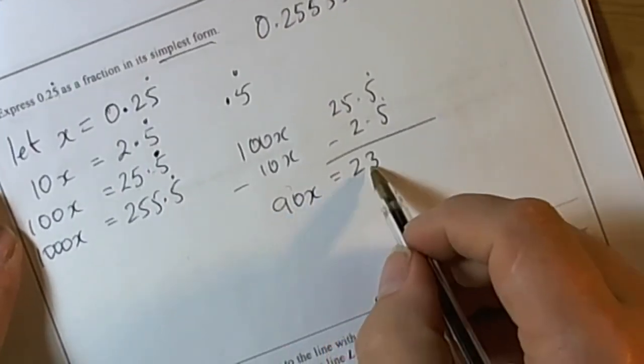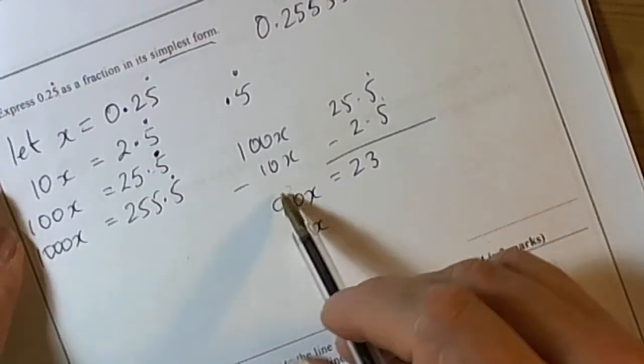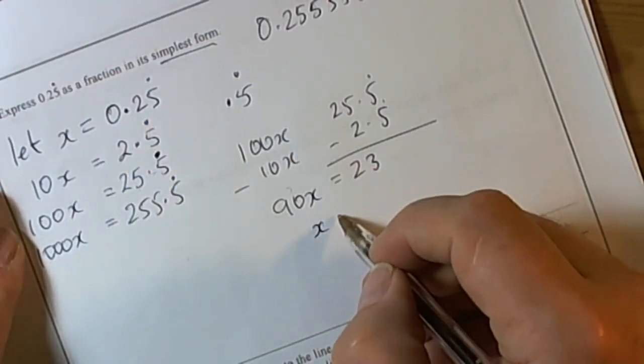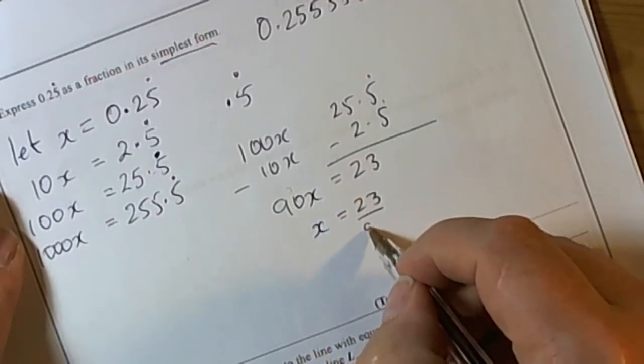So we've got 90x equals 23. We want to know the fraction that's equivalent to the decimal. We let x stand for the decimal, so we can change this into 23 divided by 90 to leave x on its own.